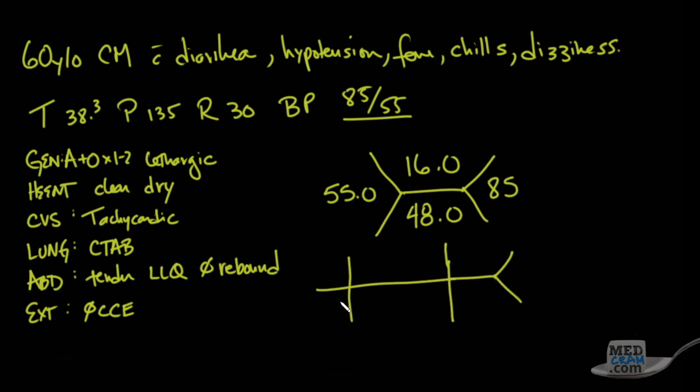His chemistries: sodium is 145, potassium is 3.0, chloride is 115, bicarbonate is 13, BUN is 30, creatinine is 1.5, and glucose is 200.